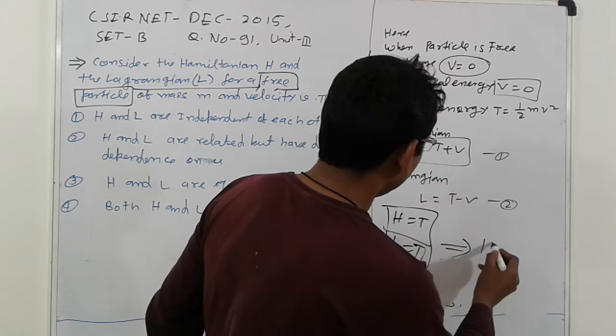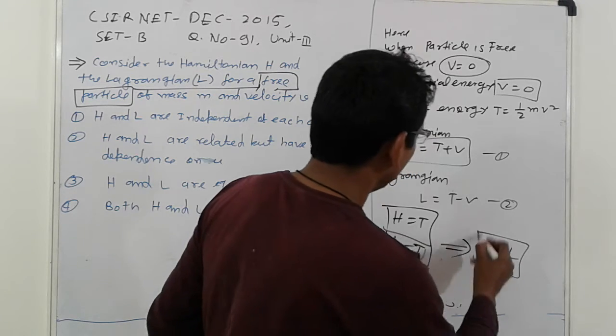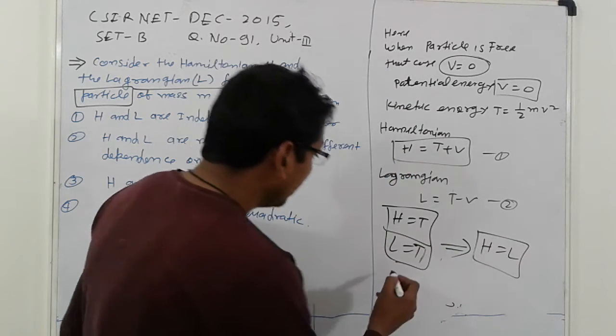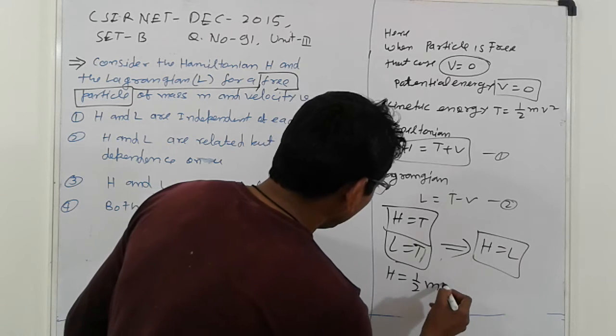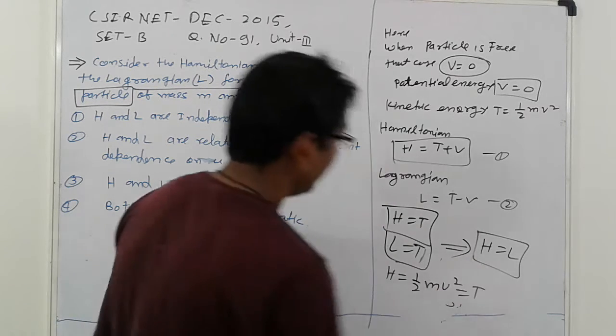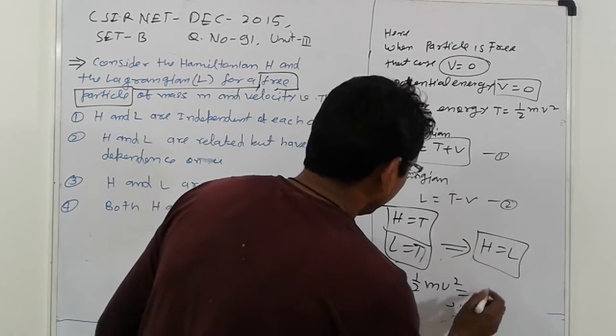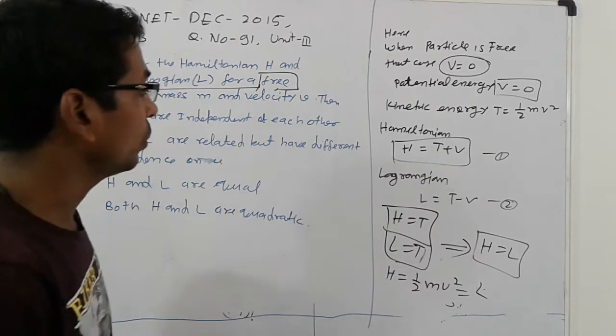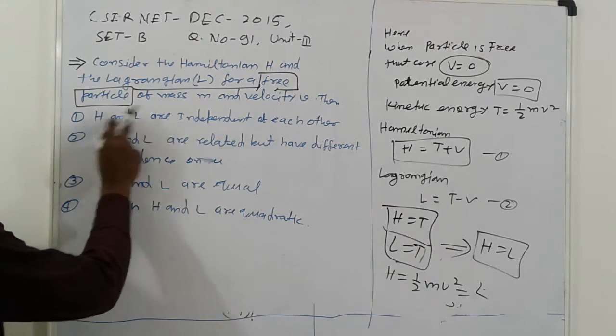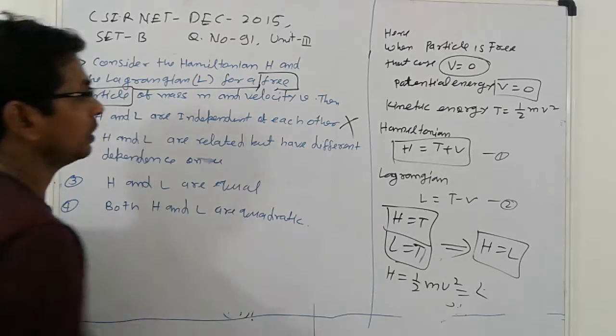It means H equals L. And H is equal to ½mv², which is also T. So L... Go to the options. So here, H and L are independent of each other. That option is wrong. So here H equals L, and those who know, those who say related, so not independent.